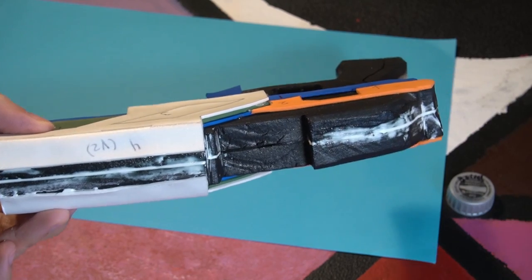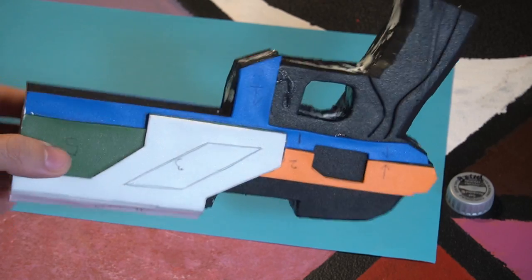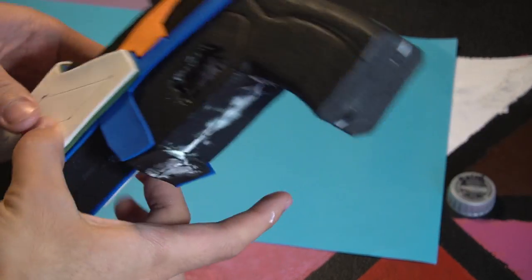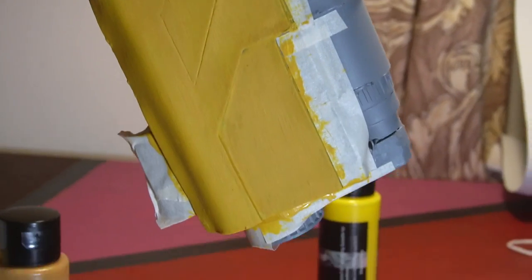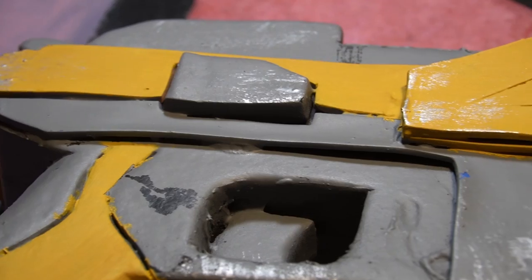Lastly, we'll just fill in the seams with quick seal and coat the whole prop in a couple layers of watered-down white glue. We can paint it gray, add an accent color that matches our soldier's armor, and then weather it a bit. And we're done!